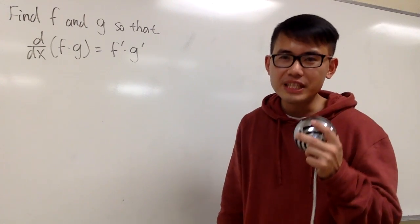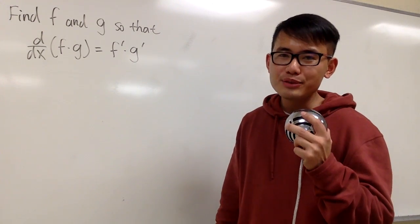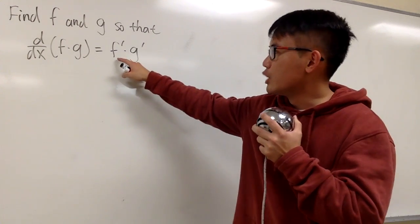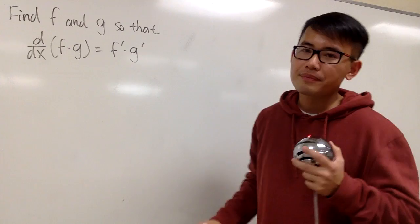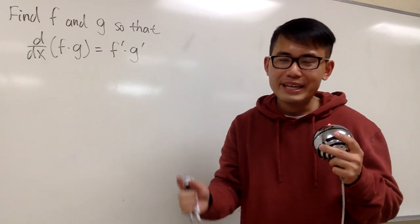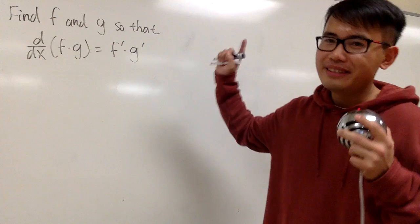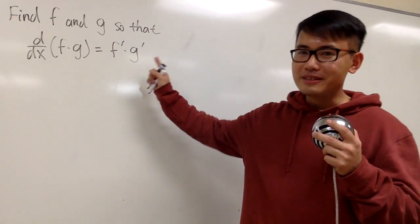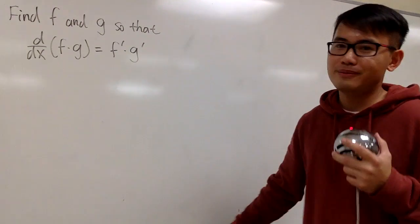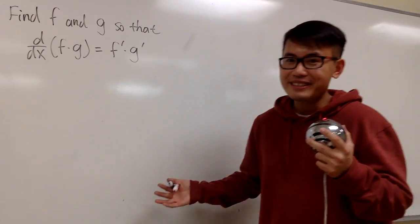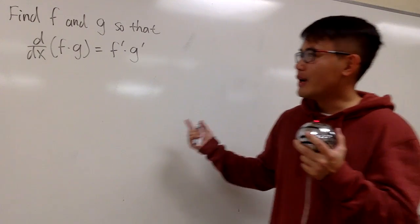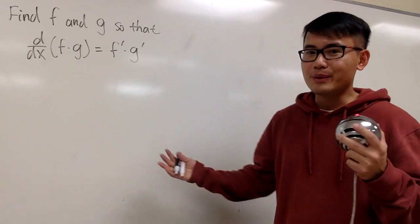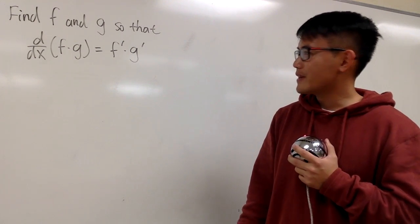Let's do some math for fun — this is about derivatives in calculus. If I tell you the derivative of f times g is the derivative of f times the derivative of g, you'd laugh at me, right? Because you know this is incorrect. However, this is not always incorrect — sometimes it may be true. So the question is: we are going to find functions f and g so that this is indeed correct.